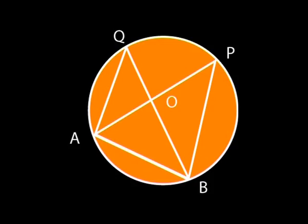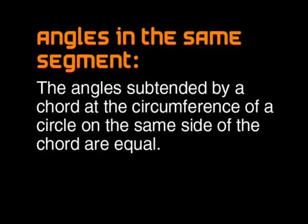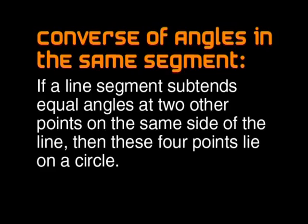Look at the diagram again — do you see that P and Q are both subtended by chord AB and are in the same segment? Look at the statement of this theorem again; can you work out what its converse will be? This is the converse: if a line segment subtends equal angles at two other points on the same side of the line, then these four points lie on a circle. The proof of the converse is not needed for examination purposes, but we need to be able to apply the result in proofs.